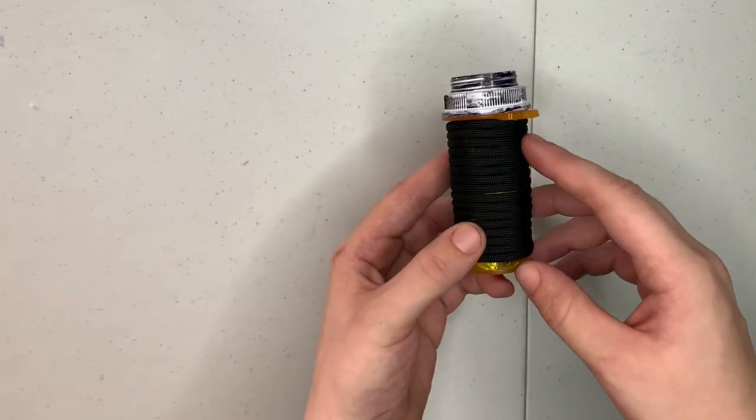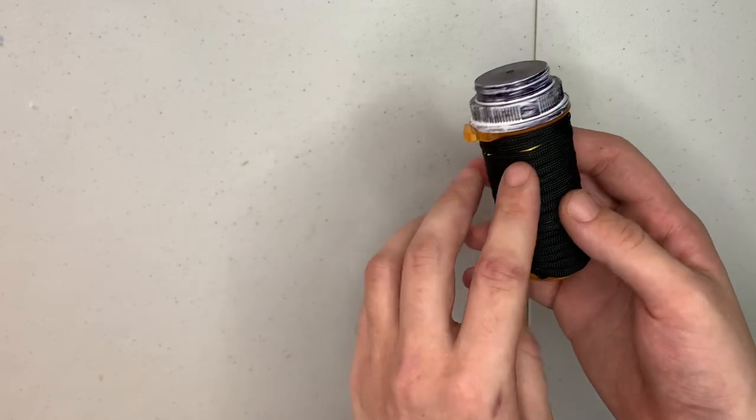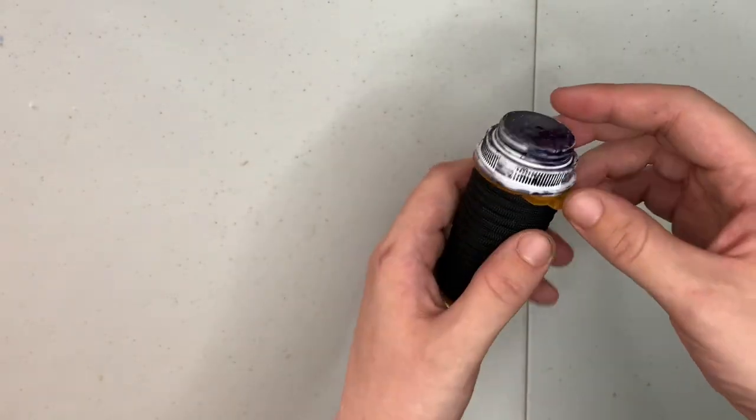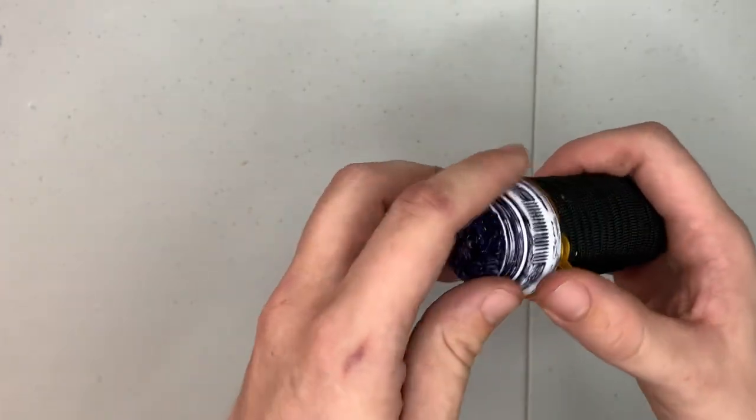On the exterior here we have 15 feet of paracord wrapped around four hooks underneath some electrical tape just to make sure everything stays in place. I just took a sharpie and tried to color code it the same with the paracord.